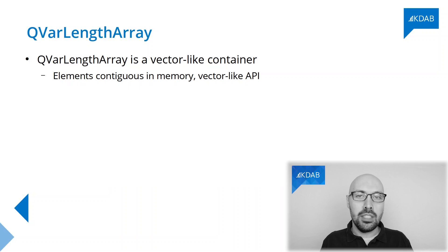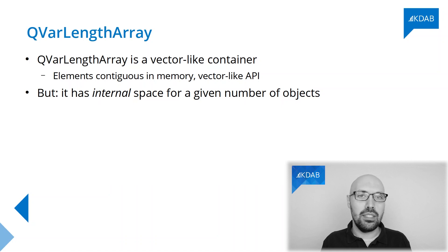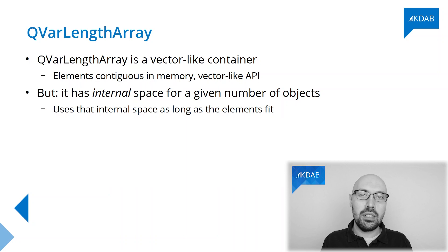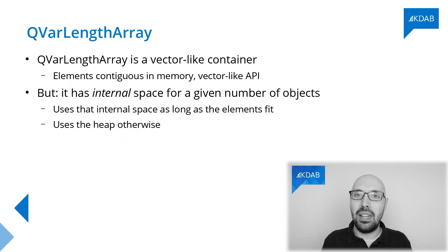However, it has one important difference from a plain vector, such as QVector or standard vector. QVarLengthArray has a little bit of space pre-allocated inside of it, and this pre-allocated space is used in case you have just a handful of objects. If those objects fit inside the pre-allocated space, that's the one that is going to be used, and you're not doing any memory allocations. Otherwise, if you insert too many objects, you're going to hit the heap, which means you're going to pay for memory allocations, and in this case you're not different from a plain vector implementation.